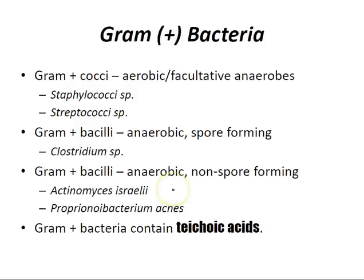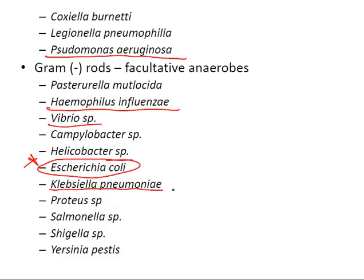These gram-negative rods cover infections from land to sea: UTIs from E. coli, kidney stones from Proteus producing urease, pneumonia from Klebsiella, respiratory infections from H. influenzae, gastric ulcers from H. pylori, bloody diarrhea from Shigella and Salmonella, benign diarrhea from Campylobacter, and the bubonic plague from Yersinia pestis.